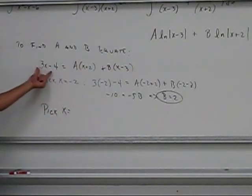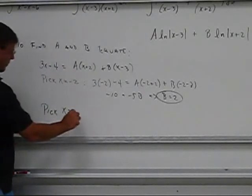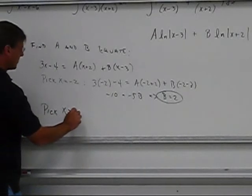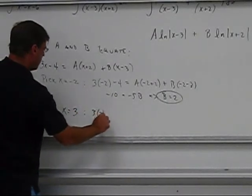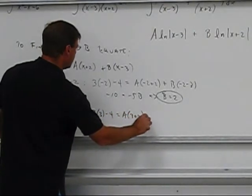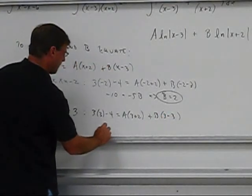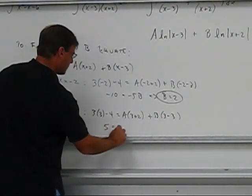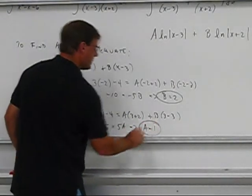So if you watch this, pick x equal to 3, I get 3 times 3 minus 4 equals a times 3 plus 2 plus b times 3 minus 3. That gives me 5 equals 5a, a equals 1.